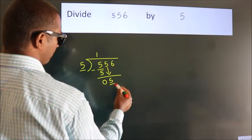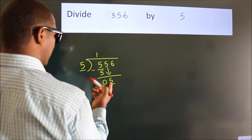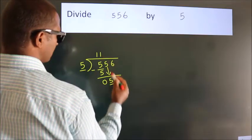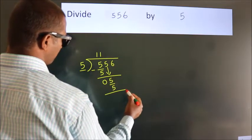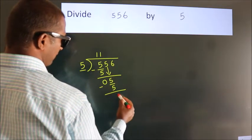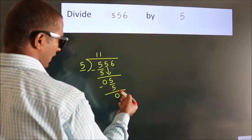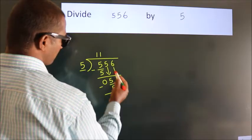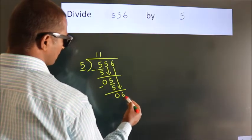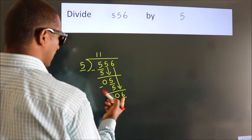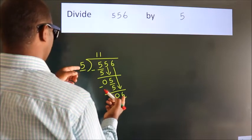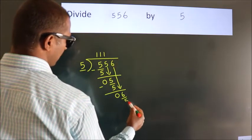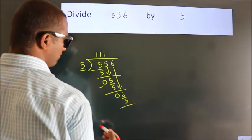After this, bring down the beside number, so 5 down. When do we get 5 in the 5 table? 5 once is 5. Now we subtract — we get 0. After this, bring down the beside number, so 6 down. A number close to 6 in the 5 table is 5 once is 5. Now we subtract.